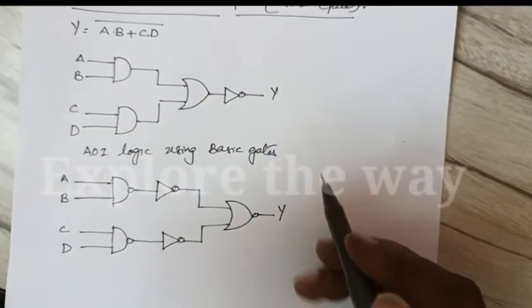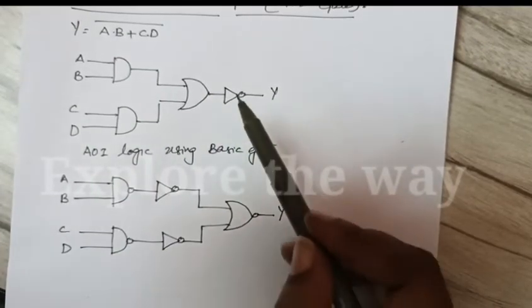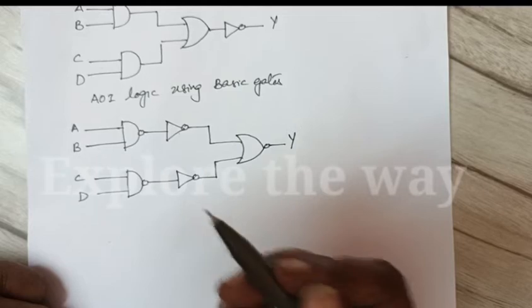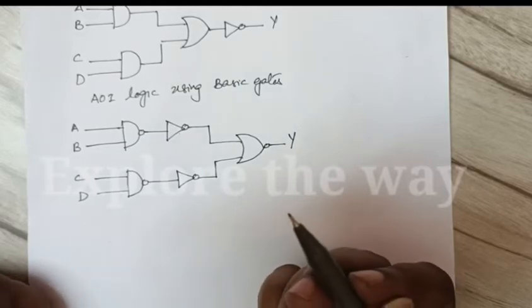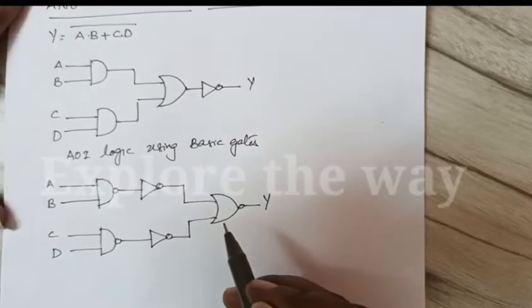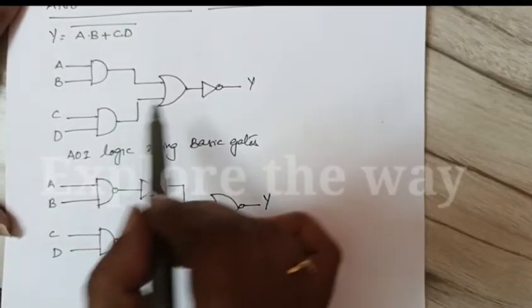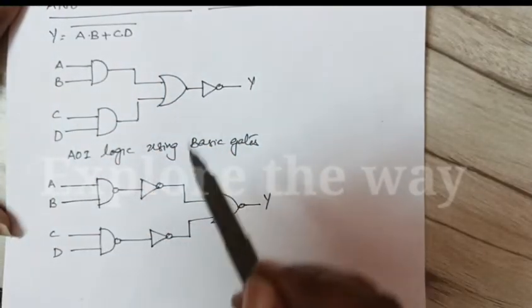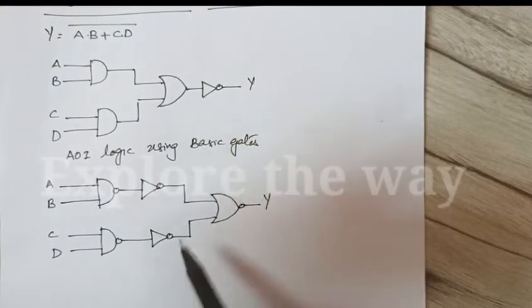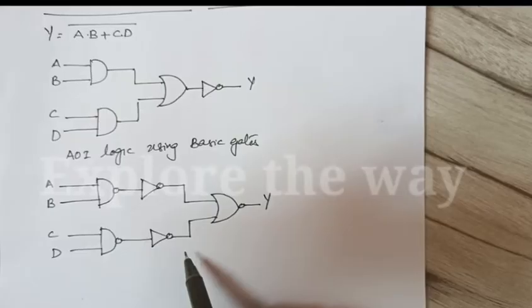So we can implement AOI logic using basic gates and universal logic gates. Then why are we going for CMOS AOI gate? Let us check how many transistors are required to implement the AOI gate using basic gates and universal logic gates.